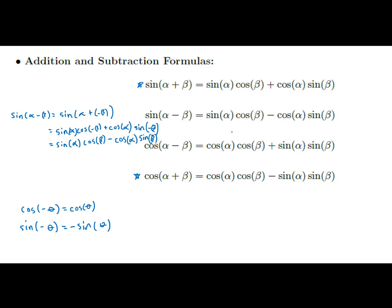That gives you the subtraction formula for sine. You can do the same thing with cosine of alpha minus beta and re-derive what it should be just from the two addition formulas. So don't memorize all four distinct formulas — just memorize the ones with plus, and let the minus versions come from the fact that minus beta is the same as plus negative beta.